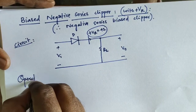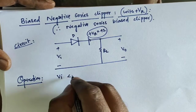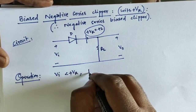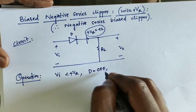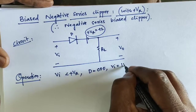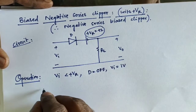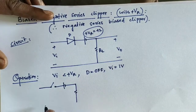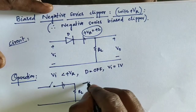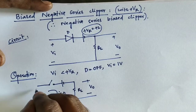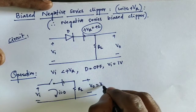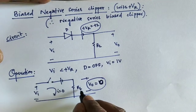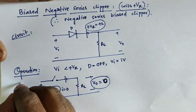Case 1: when Vi is less than plus Vr, the diode acts in the off state. For example, if Vi equals 1 volt, the diode is off. Based on the circuit diagram, with the diode off, the current is 0, so V0 equals 0 into RL, which gives V0 equal to 0. This is Case 1.